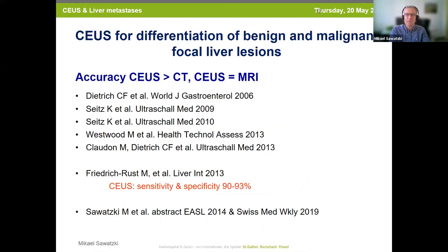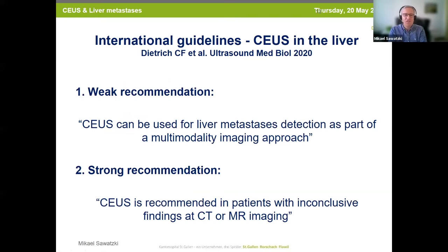CEUS is excellent for differentiation of benign and malignant focal liver lesions. Briefly summarized, the accuracy of CEUS is better than CT and similar to MRI. These are the most important prospective multicenter studies and the guidelines from 2013. In this meta-analysis, CEUS has a sensitivity and specificity between 90 and 93%. The international guidelines give a weak recommendation: CEUS can be used for liver metastasis detection as part of a multi-modality imaging approach. And a strong recommendation: CEUS is recommended in patients with inconclusive findings at CT and MRI imaging.